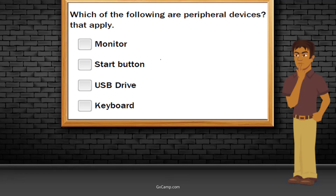So, which of the following are peripheral devices? If you use the peripheral device, you can use the mouse, the start button, USB drive, and keyboard. Let's see: monitor — peripheral device, yes. Start button — peripheral device, no. USB drive — peripheral device, yes. Keyboard — peripheral device, yes.